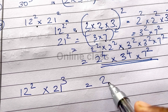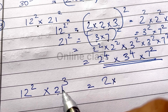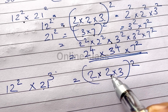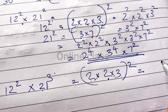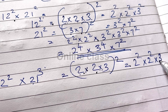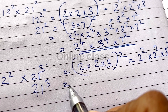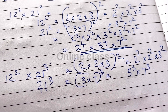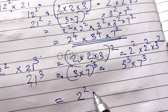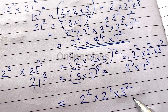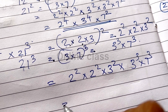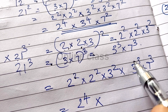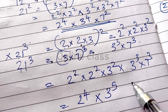Now the fifth question: 12 squared into 21 cubed. 12 squared: 12 is 2 into 2 into 3, whole squared, giving 2 square into 2 square into 3 square. For 21 cubed: 21 is 3 into 7, whole cube, giving 3 cube into 7 cube. Combining: 2 into 2 gives 2 to the 4th, then 3 squared into 3 cube gives 3 to the 5th, and 7 cube.